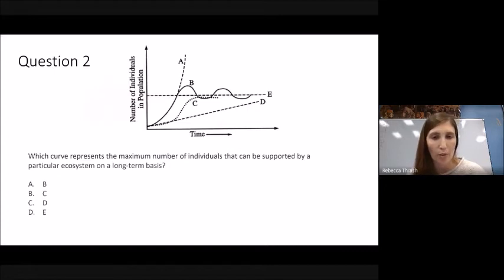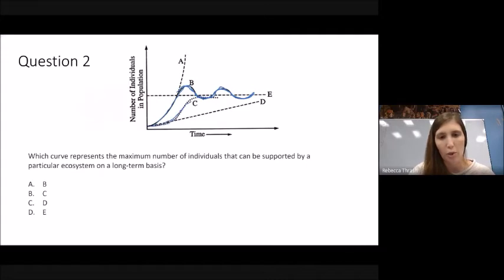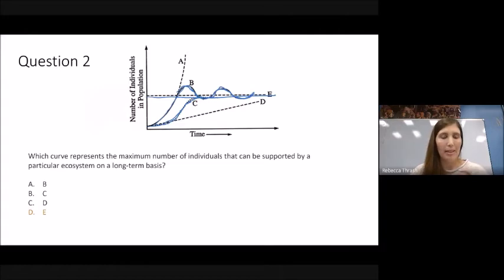Question 2: Which curve represents the maximum number of individuals that can be supported by a particular ecosystem on a long-term basis? Of the curves, B represents realistic population growth with overshoots, and C shows exponential growth leveling off at a horizontal line. The answer is E — that horizontal line represents carrying capacity K.